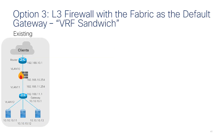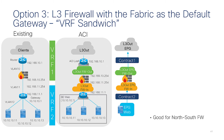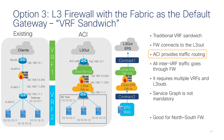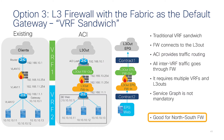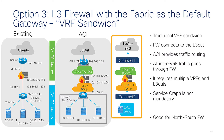Option three is a layer three firewall with the fabric as the L3 gateway — sometimes referred to as a VRF sandwich. In ACI, you would have two VRFs (VRF1 and VRF2). The difference from previous designs is that you use a layer three out to connect the firewall interfaces: a L3Out-in and a L3Out-firewall-out. ACI performs the routing and service graph is not necessary. This is an excellent design for north-south traffic.